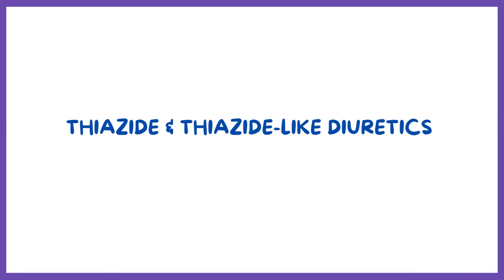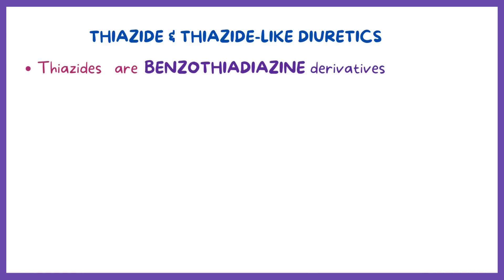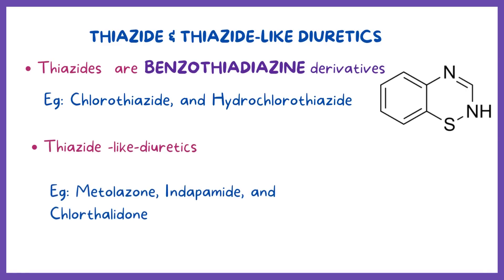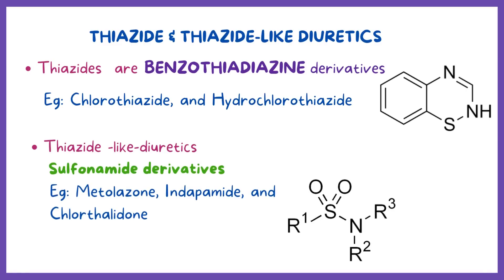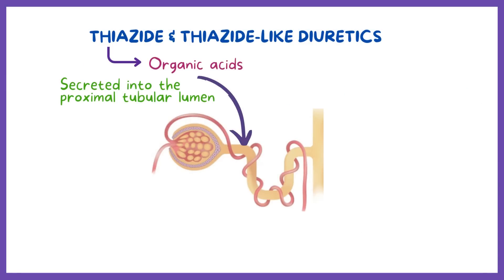What is the difference between thiazide and a thiazide-like diuretic? All these medications have the same effect; the difference stems from their chemical structure. Thiazides are benzothiadiazine derivatives, like chlorothiazide and hydrochlorothiazide, whereas thiazide-like diuretics, like metolazone, indapamide, and chlorthalidone, are sulfonamide derivatives.